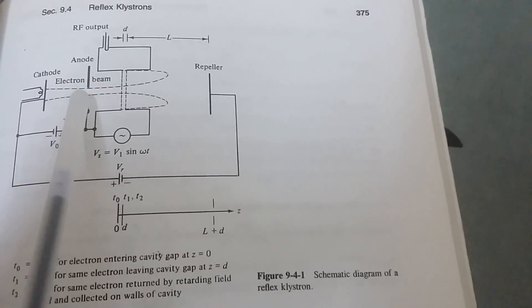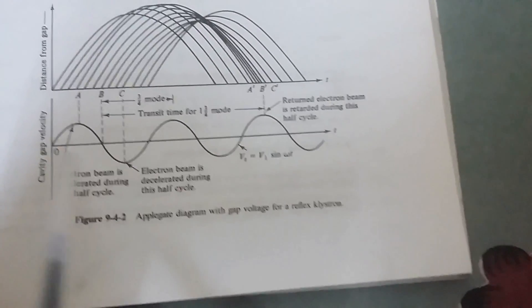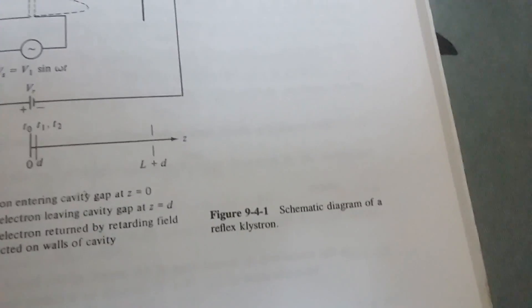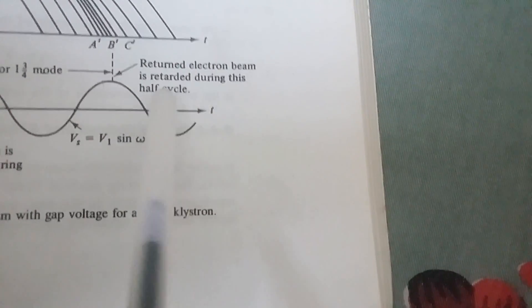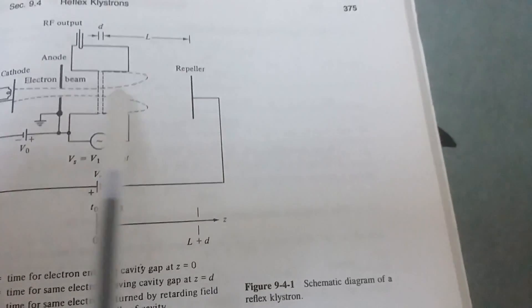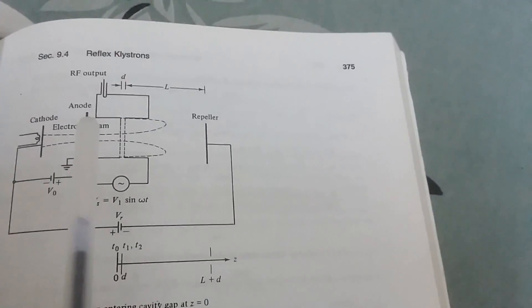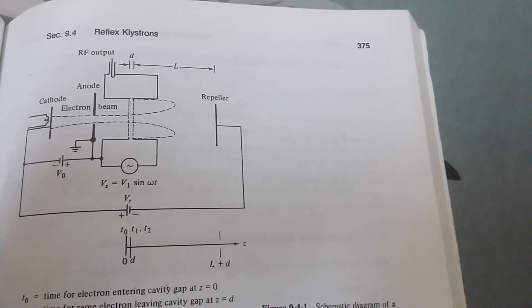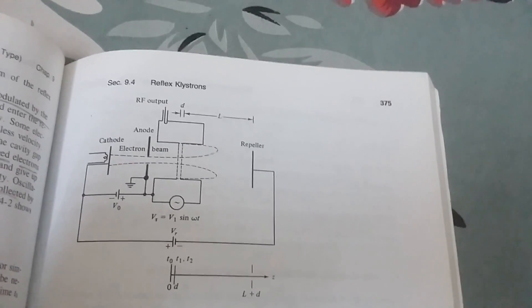The electron beam injected from the cathode is first velocity modulated by the cavity gap voltage. The electron beam is accelerated during one half of the voltage and decelerated during the other half, so their velocities change. Some electrons reach the reflector at higher velocity and get repelled at higher velocity; some reach at lower velocity. So they get bunched. These bunched electrons must reach the cavity during the retarded half cycle. During the retarded half cycle, they give up their kinetic energy to the electromagnetic energy of the field in the cavity. The output is taken from the cavity, and the electrons are finally collected by the walls of the cavity.